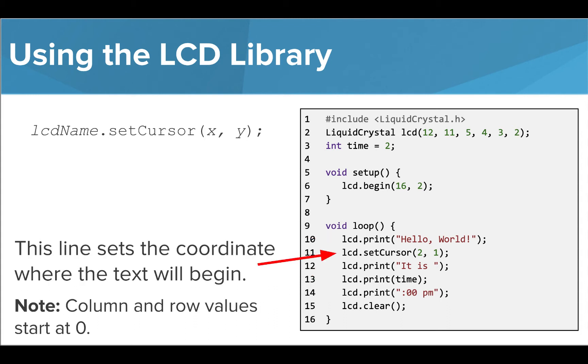We learned how to use the setCursor function to move the starting position of the text on our screen using an x-coordinate to control the column and a y-coordinate to control the row. Note that column and row values all start at 0, so the top row is considered 0 and the bottom row is considered 1.